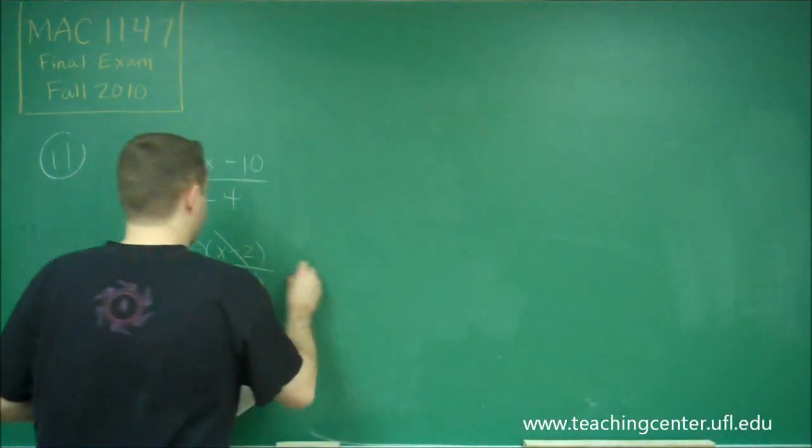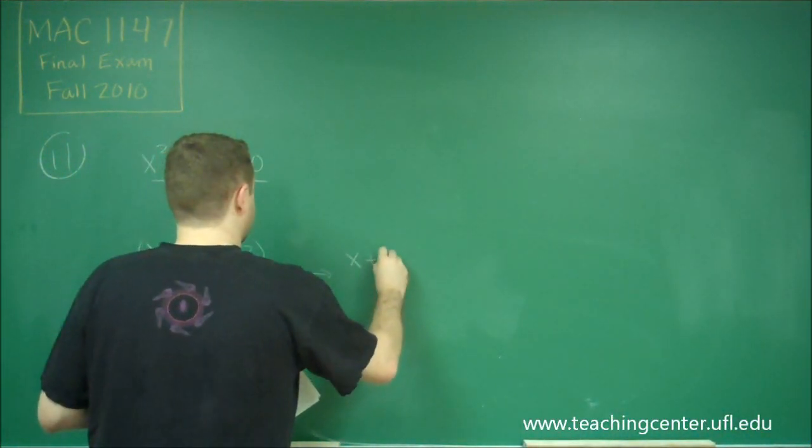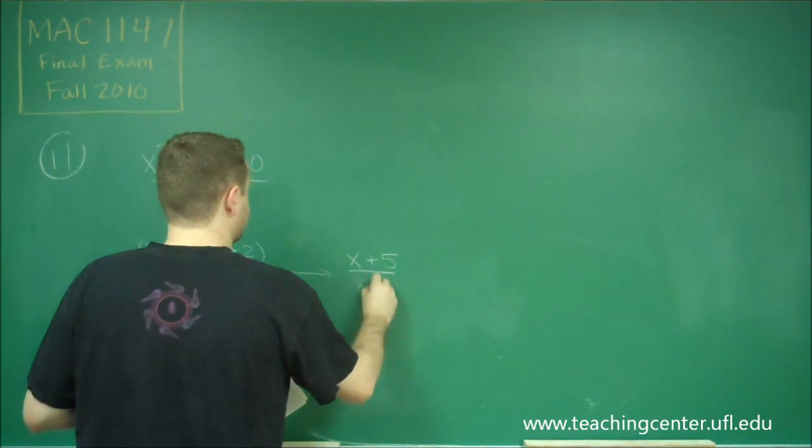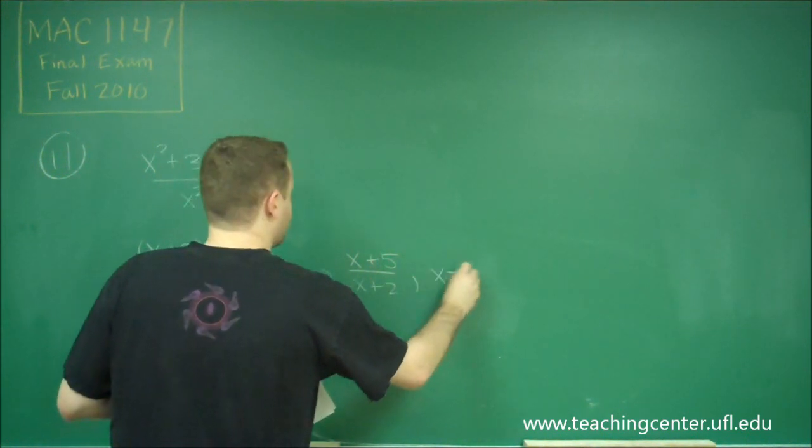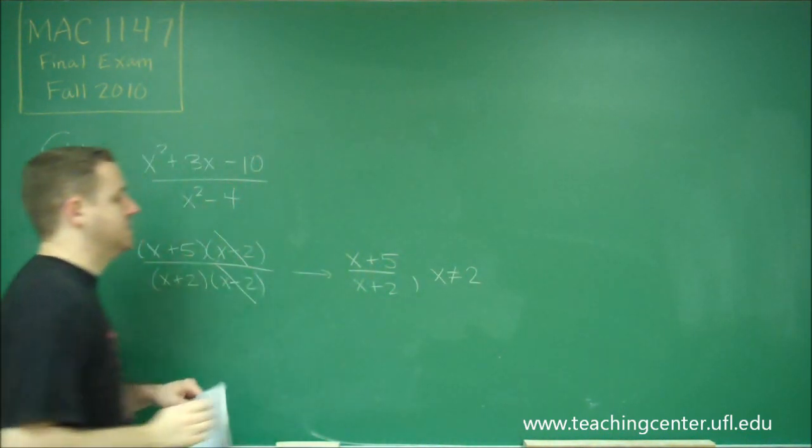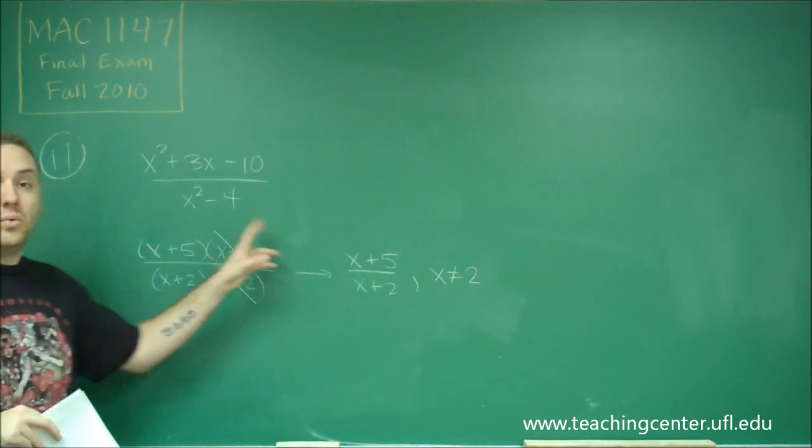So what we're left with is (x + 5) over (x + 2), where x is not equal to 2, because that was the hole that we got rid of.